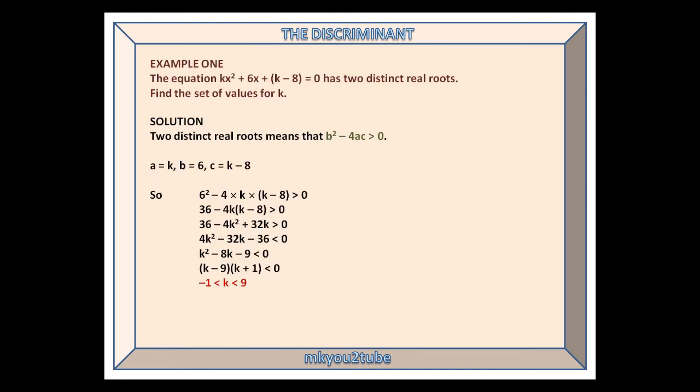We finish with three examples, one for each situation. Example 1: The equation kx squared plus 6x plus k minus 8 equals 0 has two distinct real roots. Find the set of values for k. Two distinct real roots means that b squared minus 4ac is greater than 0.